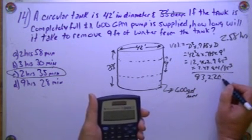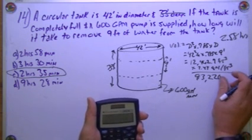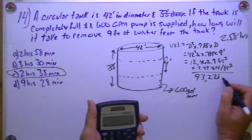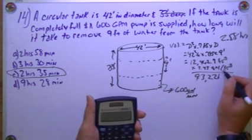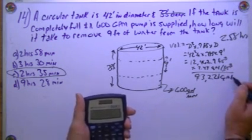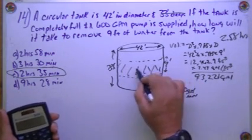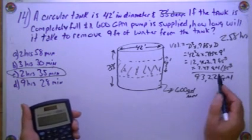93,220.99, yeah, 221. So it's 93,221 gallons. So that's how much this is. 93,221 gallons.